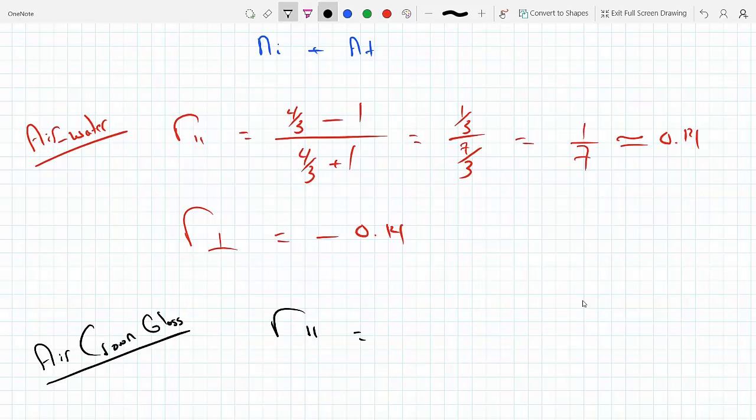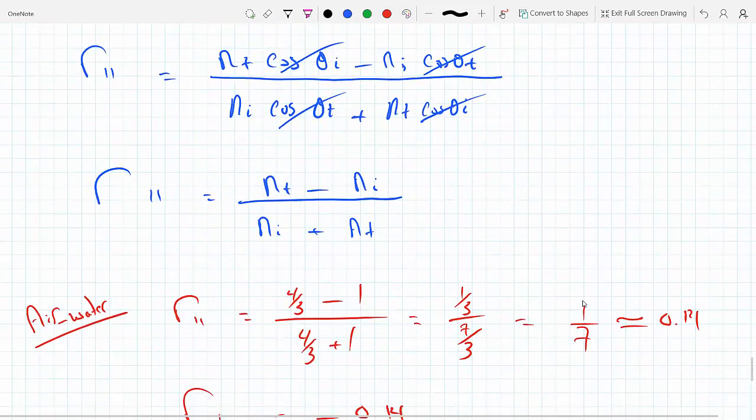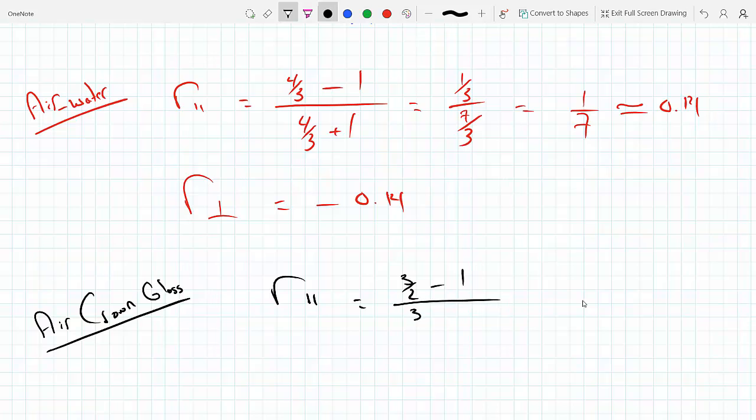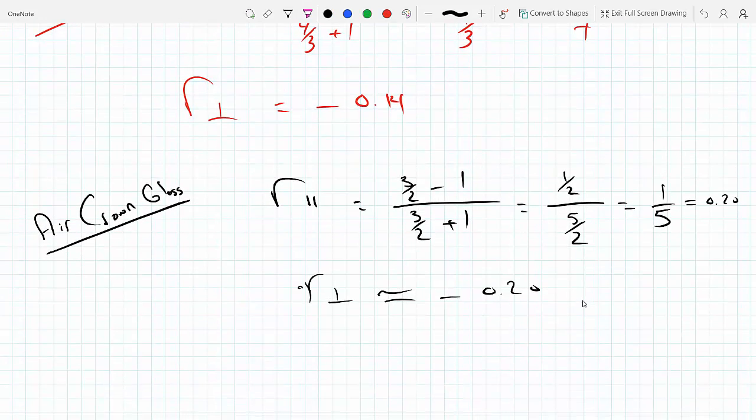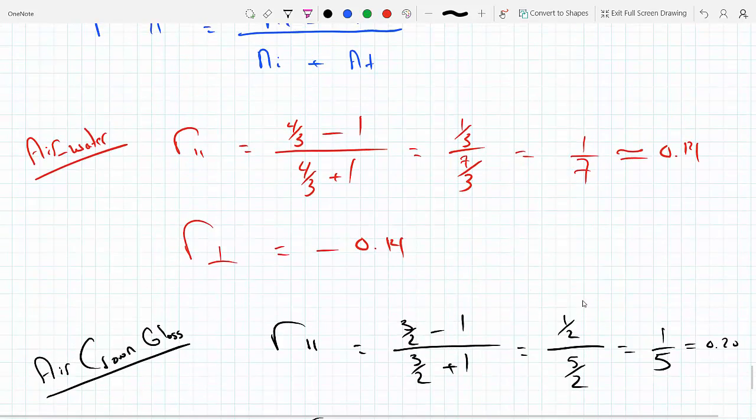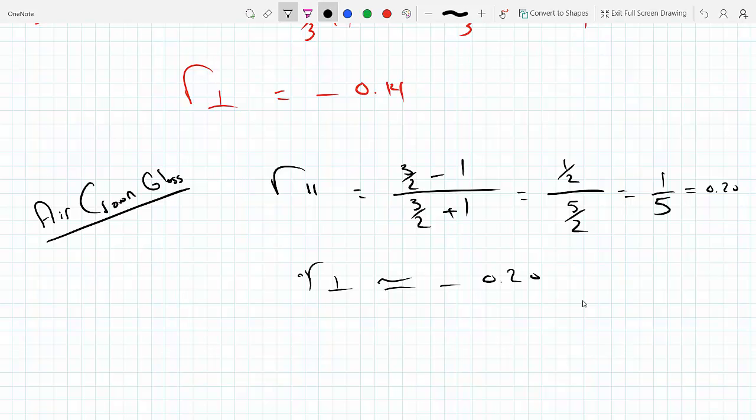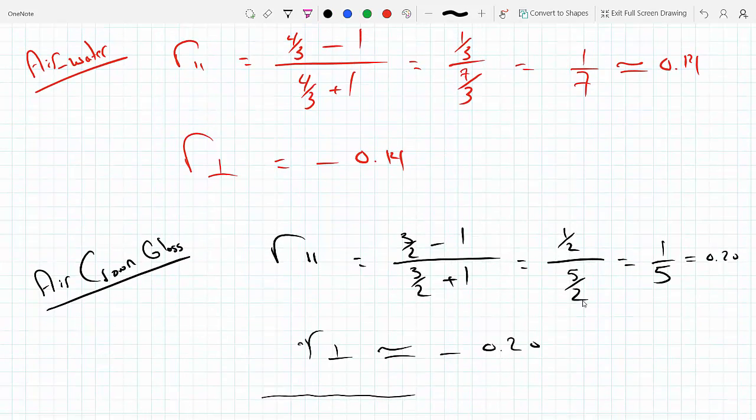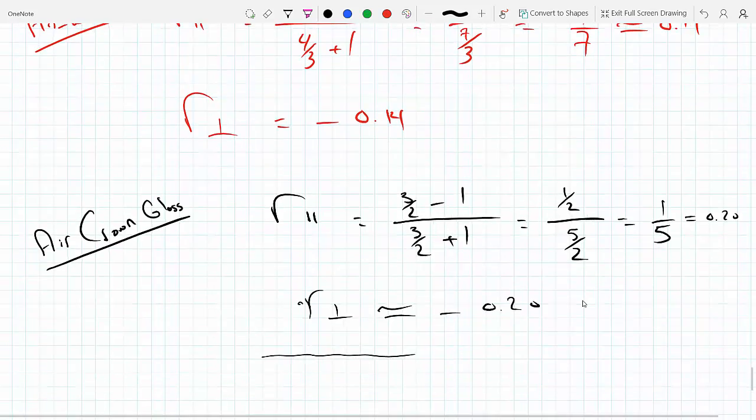We have the same thing, so that would be (3/2 - 1)/(3/2 + 1). So we will get, what's this, one-half over five-halves, which is one-fifth. So that's 0.20. And r_perpendicular. All right, okay, and now the second part of the question. So basically you get more reflection through the crown glass than the water.